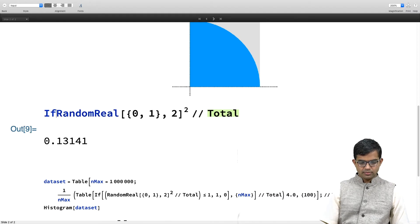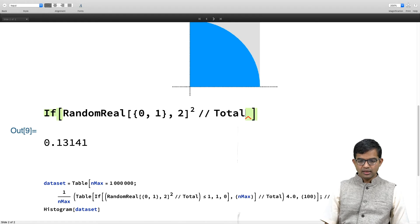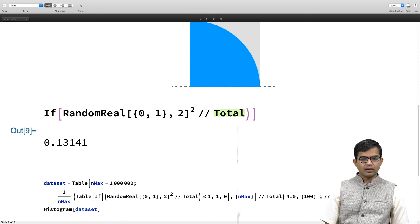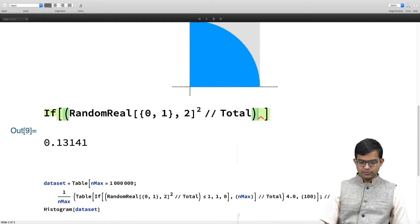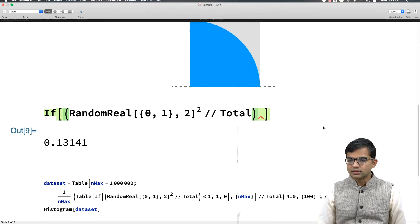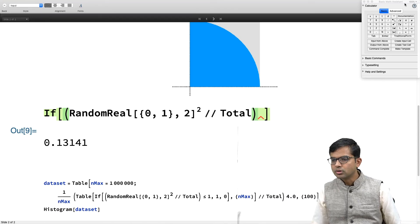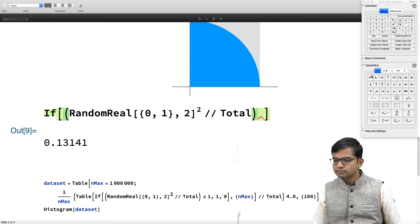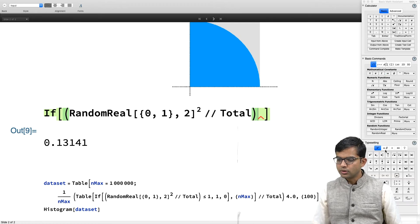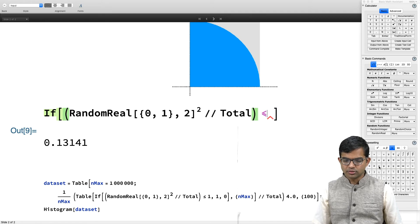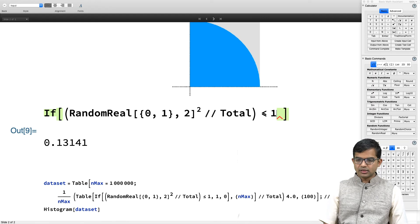What I can do is I can say if RandomReal total this distance, this entire thing, I should enclose it in these kind of brackets. If it is less than or equal to 1, you can get the syntax for this using palettes and basic math assistant. You have less than or equal to. There are of course shortcuts as well, but you can also do this.